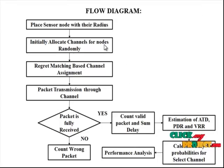Let me discuss the flow diagram for our process. Initially place the sensor node in the network with specified radius and allocate the channels for nodes randomly based on the number of channels. In the receiver-centric channel assignment way, the channel the sender sensor uses to send is determined by the receiver sensor of the transmission.